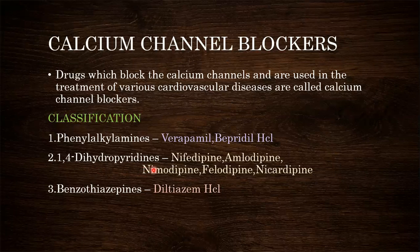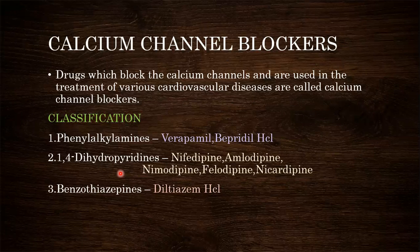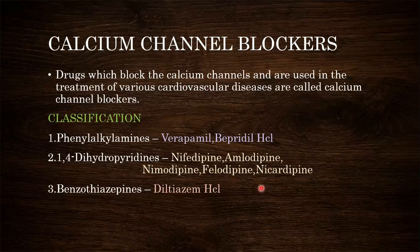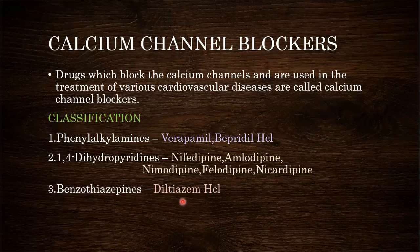The second class of calcium channel blockers are 1,4-dihydropyridines. A pyridine ring is present, and at the first and fourth positions hydrogen atoms are present. Examples are nifedipine, amlodipine, nimodipine, felodipine, and nicardipine. The third category is benzothiazepines, where a benzene ring is fused with thiazepine. The example is diltiazem hydrochloride.